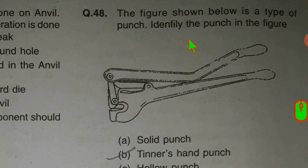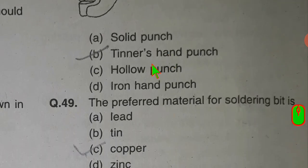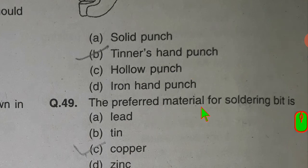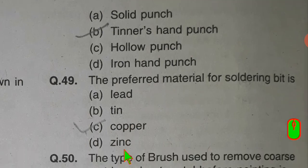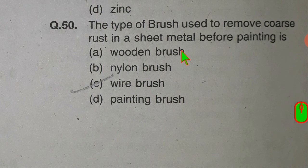The figure shown below is a type of punch. Identify the punch in the figure: tinners hand punch. The preferred material for soldering bits is copper. The type of brush used to remove coarse rust from sheet metal before painting is a wire brush.